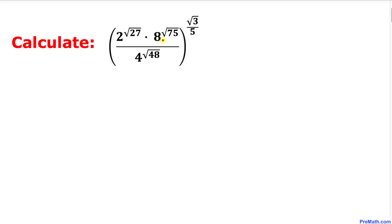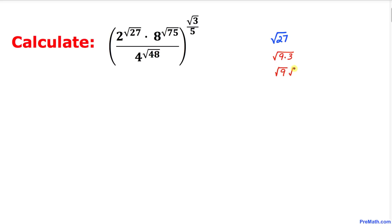Let's focus on the exponent part: square root of 27. We can write 27 as 9 times 3 under the square root, then break it down as square root of 9 times square root of 3. Square root of 9 is 3, so the square root of 27 can be written as 3 times square root of 3.